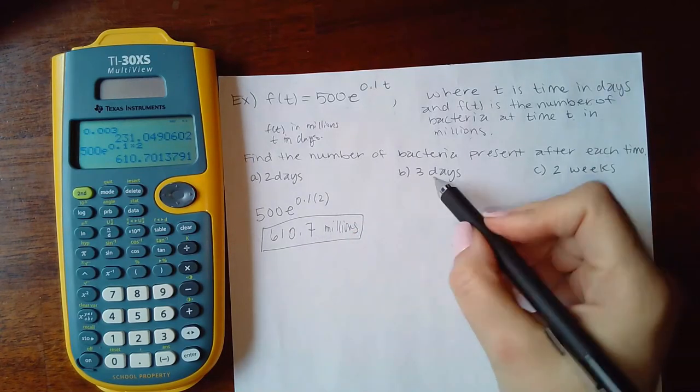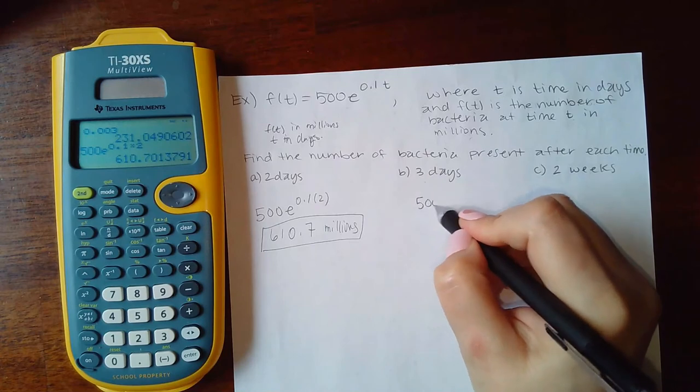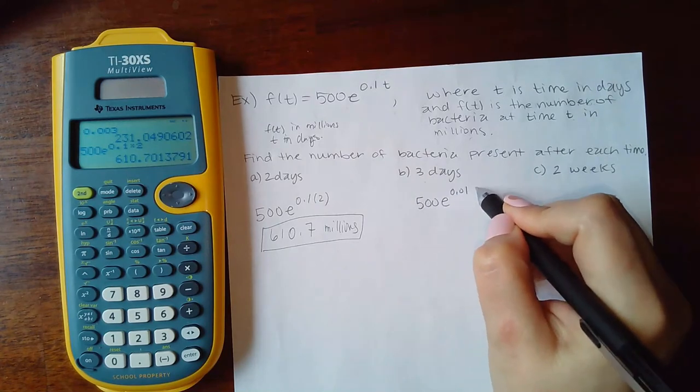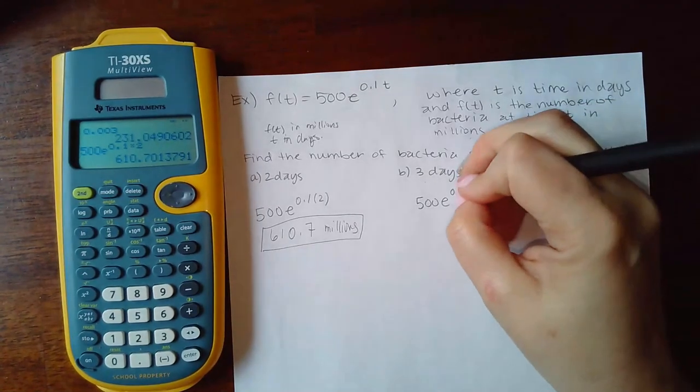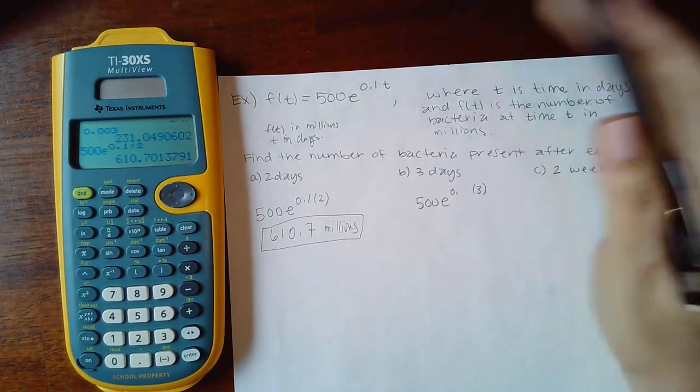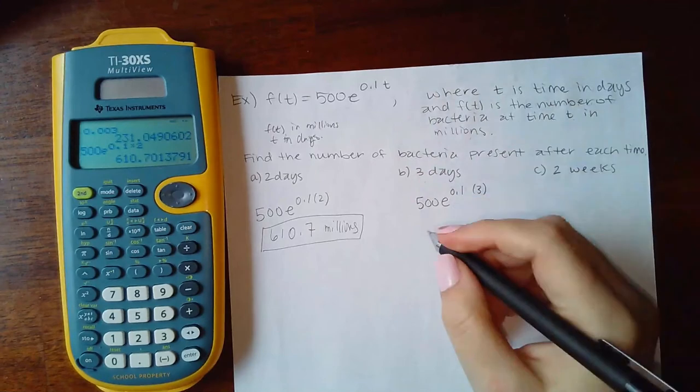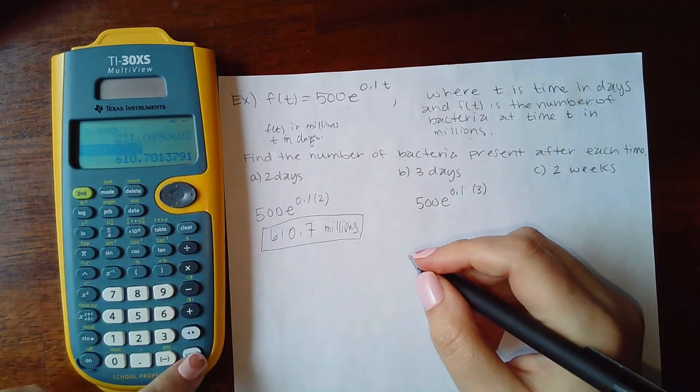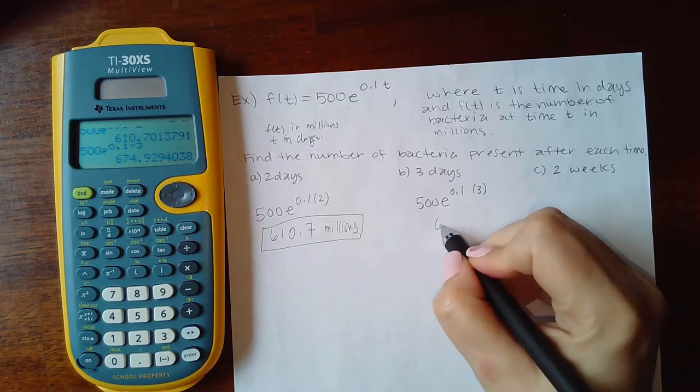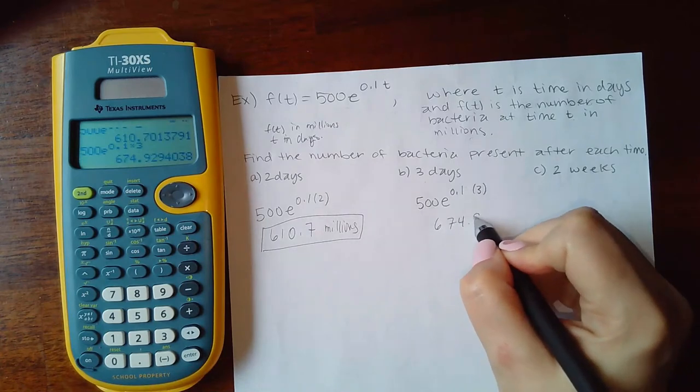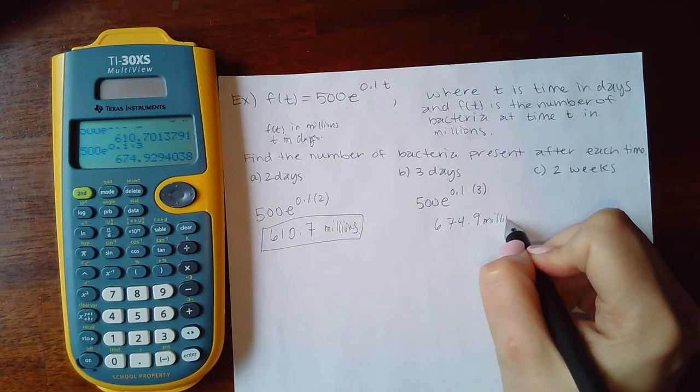Now three days just means I'm going to plug in three. Oops, I put in an extra zero for some reason, which will change things, right? I won't get the correct answer. So I'm going to go back here and I'm just going to change that two to a three. Now I get 674.9 millions of bacteria.